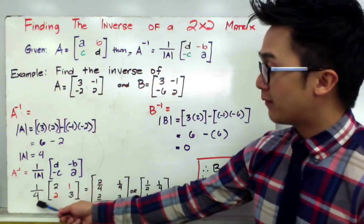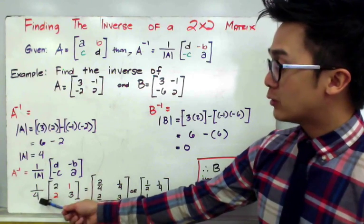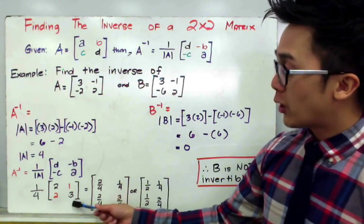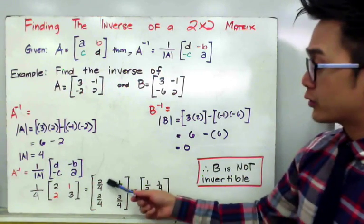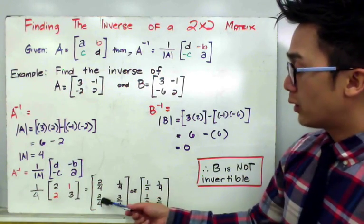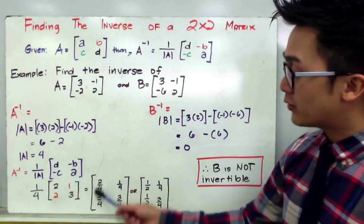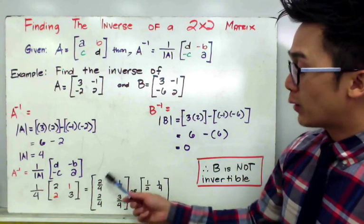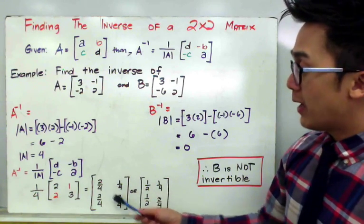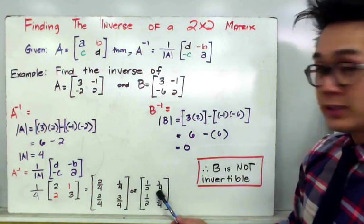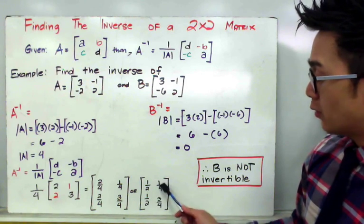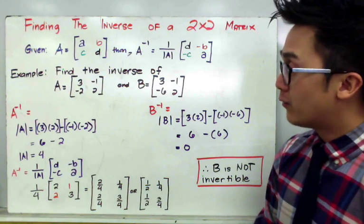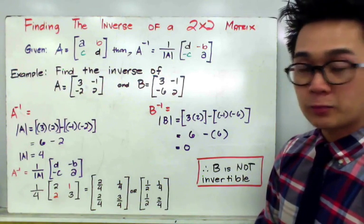Now that we have a scalar constant, we perform scalar multiplication inside the matrix. A inverse equals 2 over 4, 1 over 4, 2 over 4, and 3 over 4. Simplifying the fractions, A inverse is written as 1 half, 1 fourth, 1 half, and 3 fourths. That is how we find the inverse of a given 2 by 2 matrix.